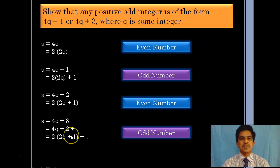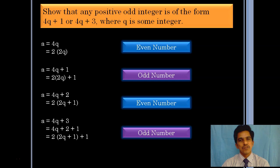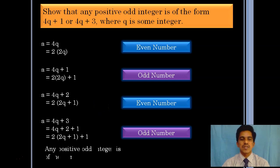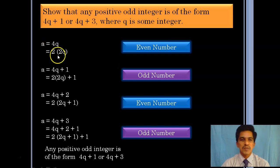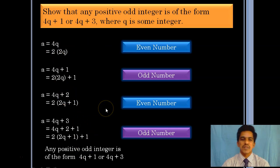Out of these four numbers — 4q, 4q plus 1, 4q plus 2, 4q plus 3 — 4q and 4q plus 2 are even numbers, and 4q plus 1 and 4q plus 3 are odd numbers. Therefore, any positive odd integer is of the form 4q plus 1 or 4q plus 3. Similarly, even integers would be of the forms 4q and 4q plus 2. The concept is the same but the question is different.